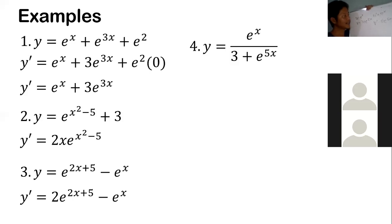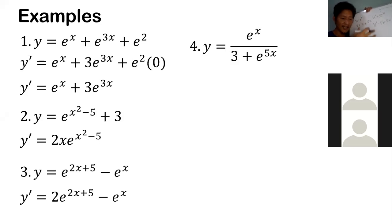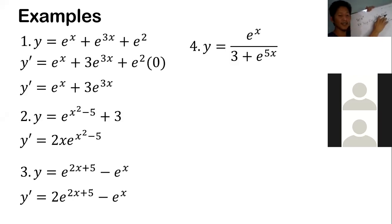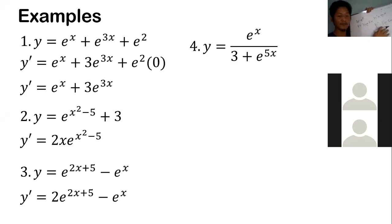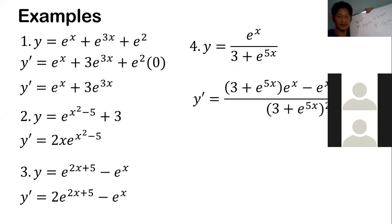With these four values, we can now use the quotient rule. The quotient rule: lo d-high minus high d-low. So we have the denominator (3 plus e to the 5x) times the derivative of the numerator, minus the numerator times the derivative of the denominator, all over v squared.